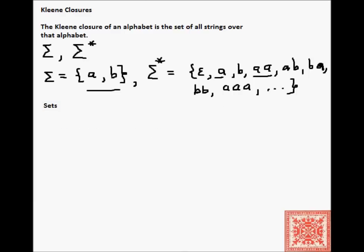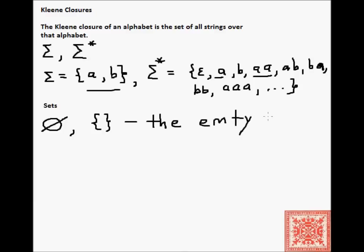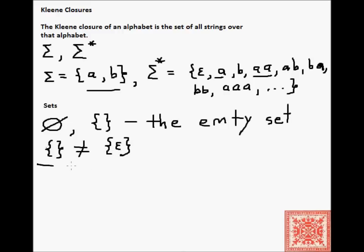Let's talk a little bit more about sets. There's one set called the empty set, and there are two notations we can use: either the crossed zero, or just a pair of matching curly braces. This is called the empty set, a set of zero elements. One thing to note is that the empty set is not the same as the set that contains epsilon, the empty string.